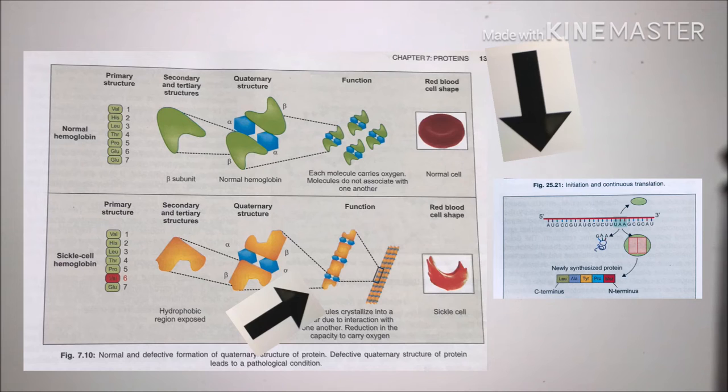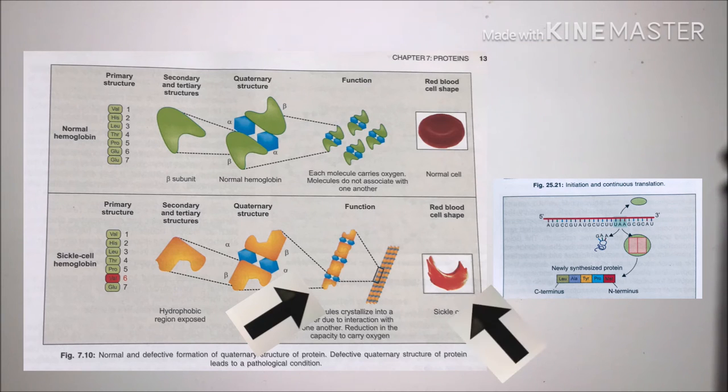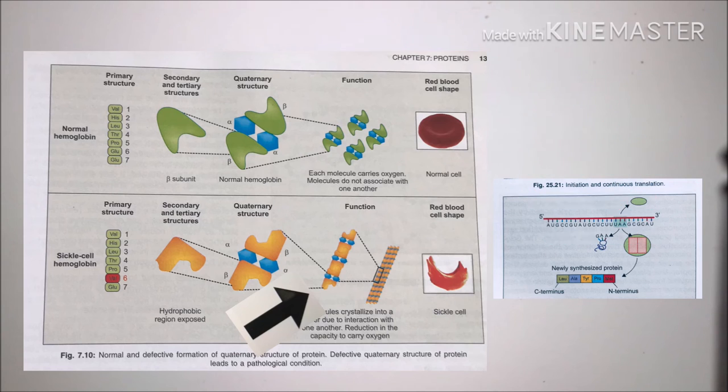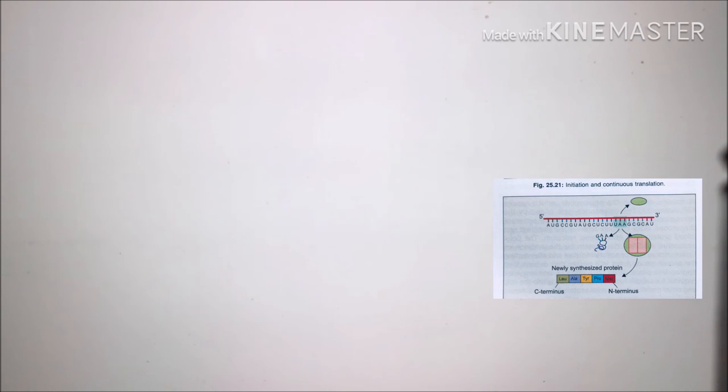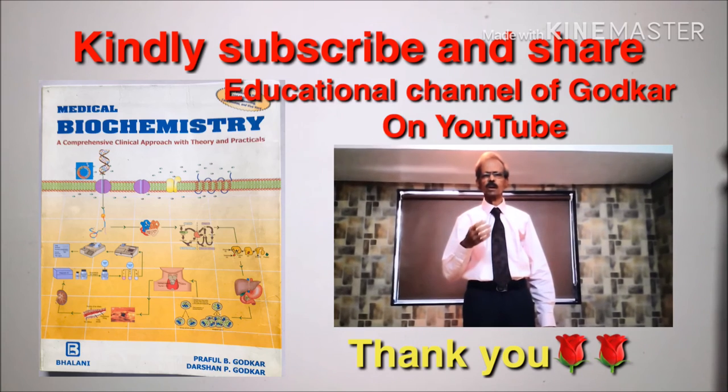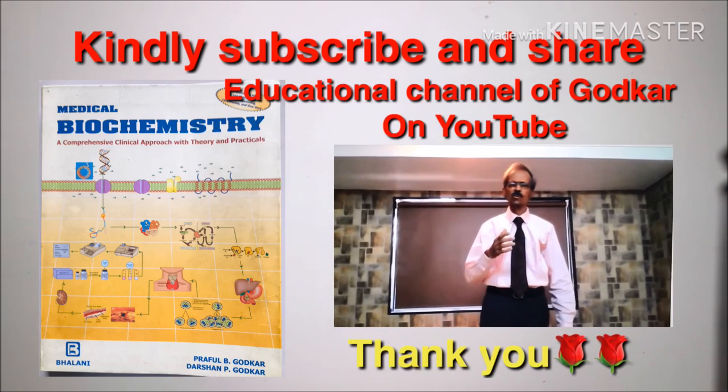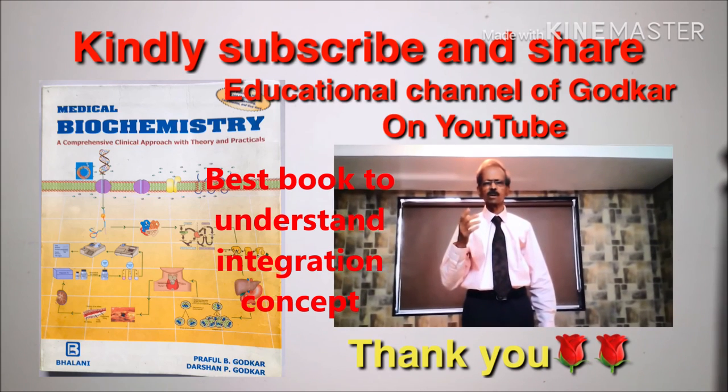As a result, intracellular fibers are formed which cause distortion of red blood cells into sickle shape. This leads to decreased lifespan of red blood cells and also to hemolytic anemia. Hence, the pathophysiology of sickle cell anemia can be understood best on the basis of medical biochemistry.